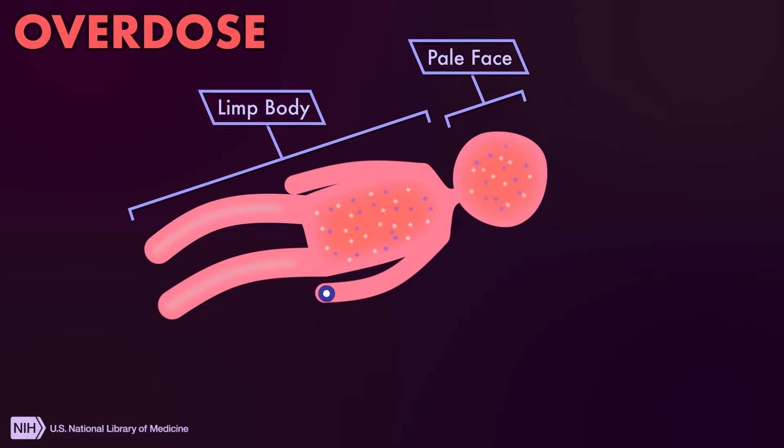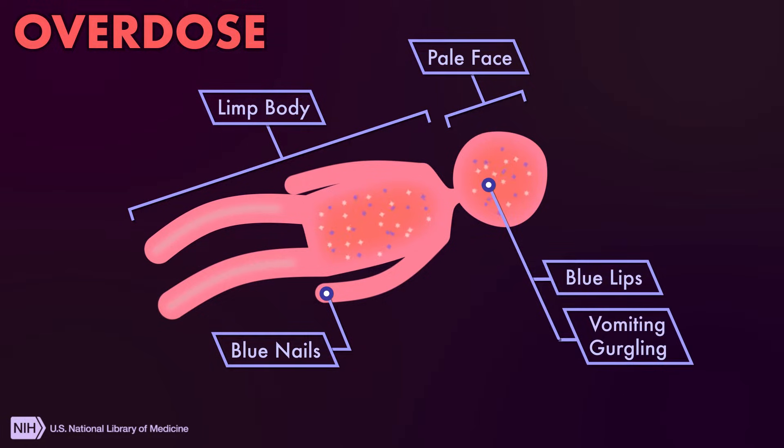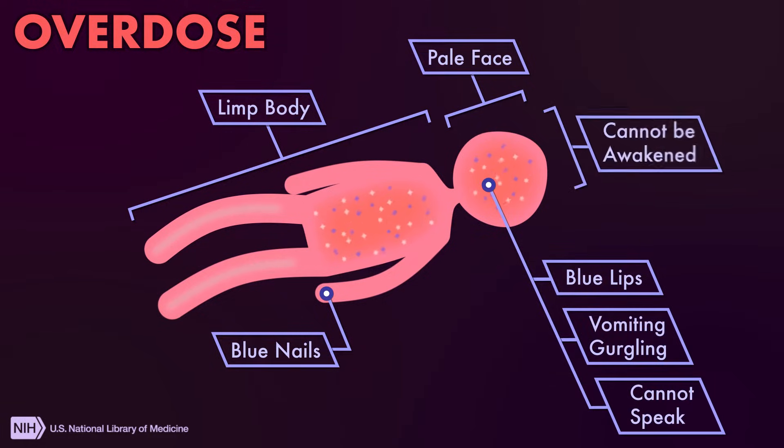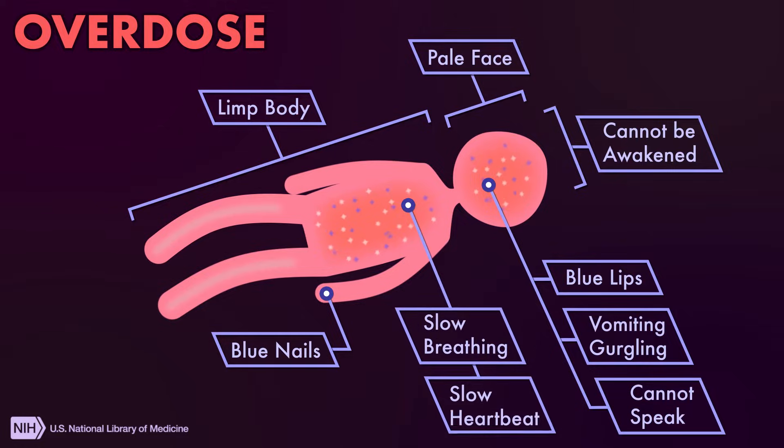Limp body, pale, clammy face, blue fingernails or lips, vomiting or gurgling sounds, inability to speak or be awakened, slow breathing or heartbeat.